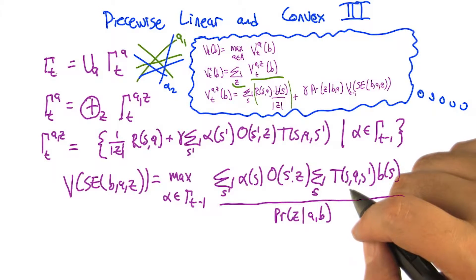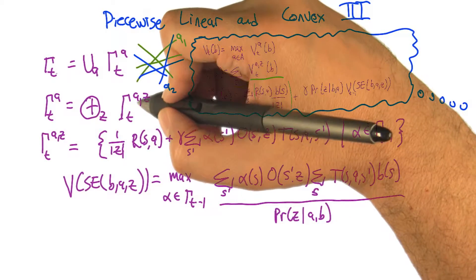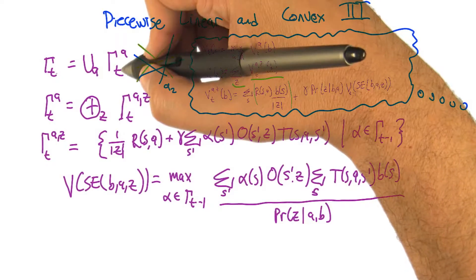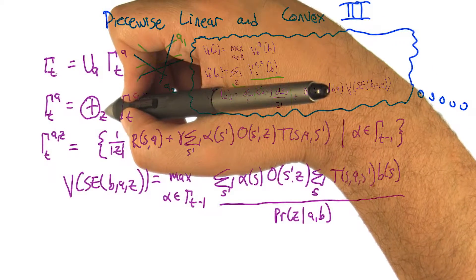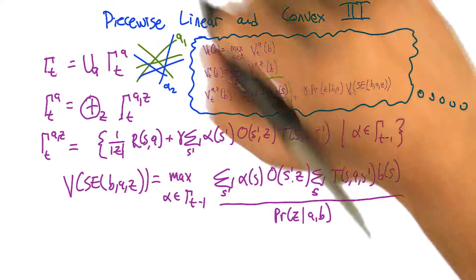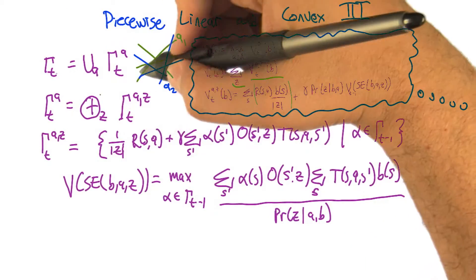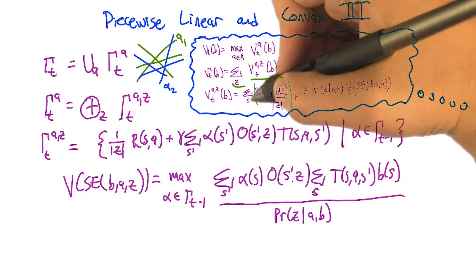But yeah, it's probably worth repeating that certainly if the number of actions is infinite, then this is problematic. This union is problematic. And if the number of observations is infinite, then this cross sum is problematic. So finite state space, finite action space, finite observation space.